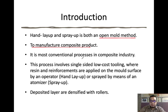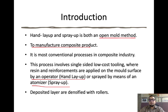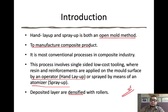It is the most conventional process in the composite industry. This process involves single-sided, low-cost tooling where resin and reinforcement are applied on the mold surface by an operator — which is hand layup — or sprayed by means of an atomizer — which is spray layup. In the open mold process, resin and reinforcement are combined directly. The deposited layer is then densified with a roller applied over the composite reinforcement and resin.